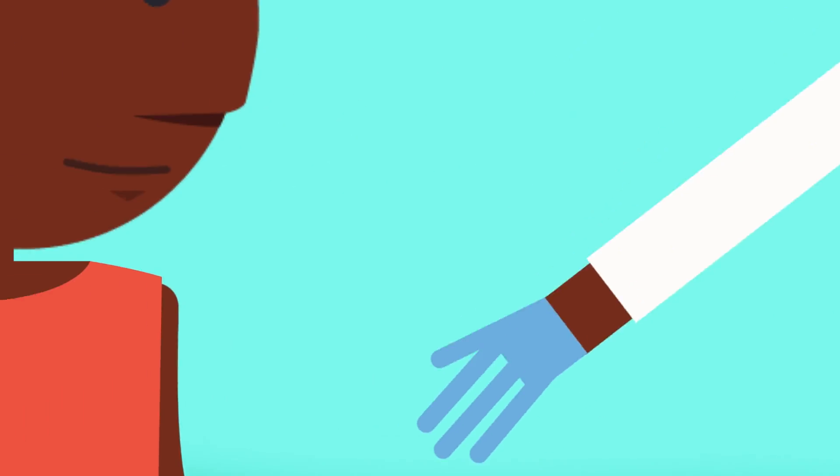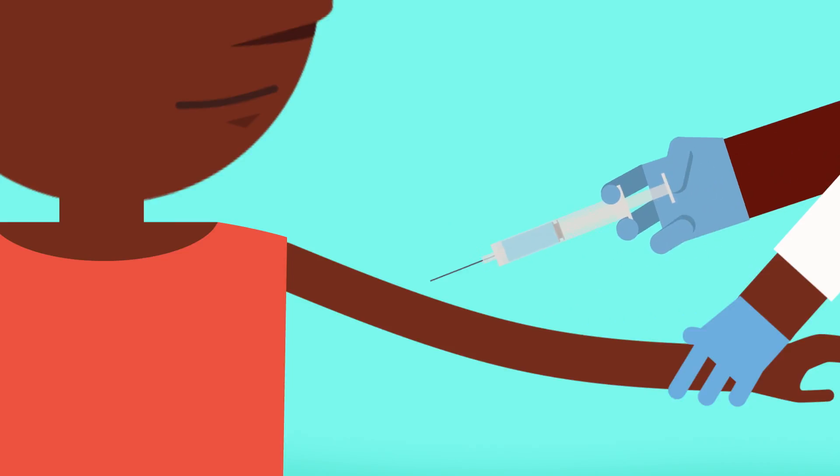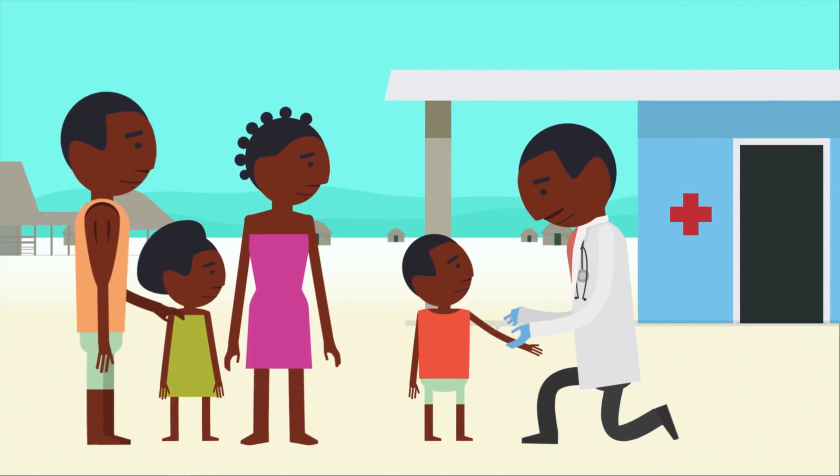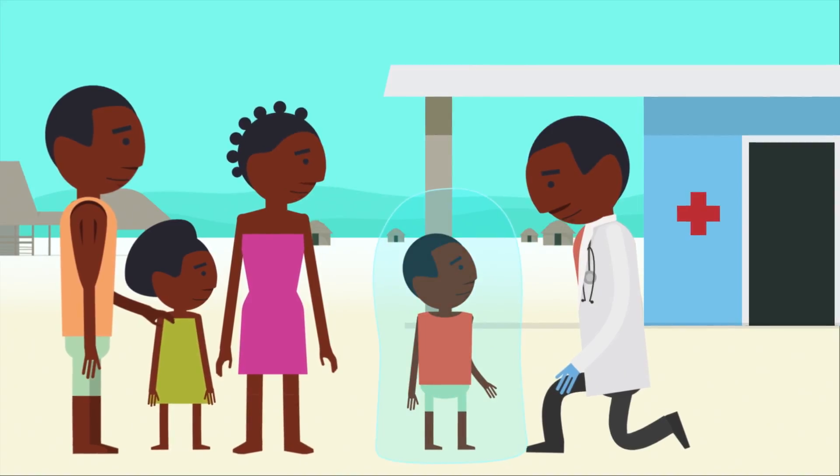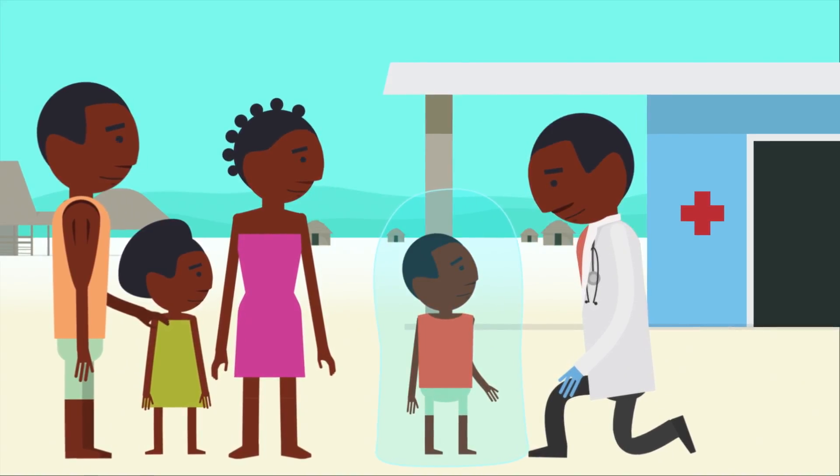We're working on a type of vaccine for humans that would stop mosquitoes from spreading malaria. And that means it would protect people, too. It's called a transmission-blocking vaccine. Here's how it works.